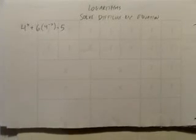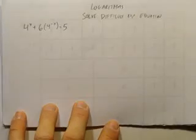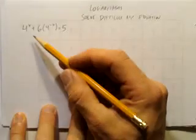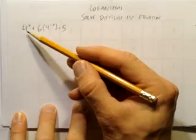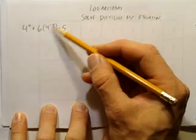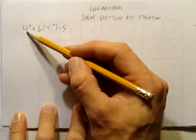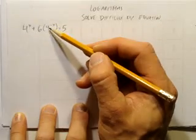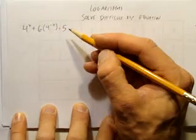All right, here are some logarithm stuff. And in particular, this one's a difficult exponential equation to solve. The first thing that's tricky is what to do. How do you solve for x when you've got 4 to the power of x and 4 to the negative x? The equation reads 4 to the power of x plus 6 times 4 to the negative x equals 5.